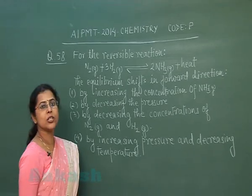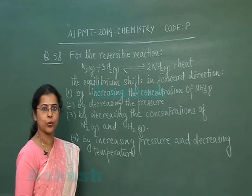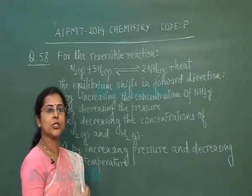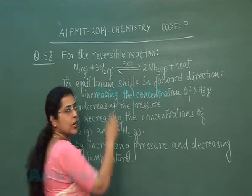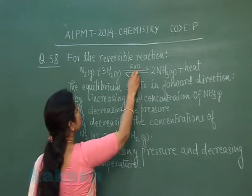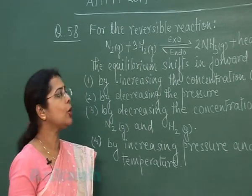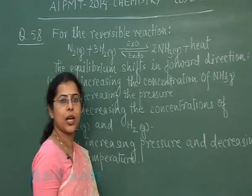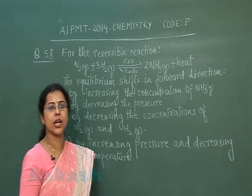In this question, a reversible reaction is given — it is the formation of ammonia. In this reaction it is mentioned that heat is evolved, which means the forward reaction is an exothermic reaction, and if the forward reaction is exothermic then the backward reaction becomes endothermic. Now we have to decide the suitable condition for the formation of ammonia. Here we need to apply Le Chatelier's principle.